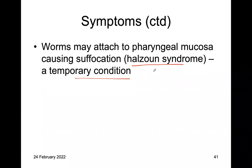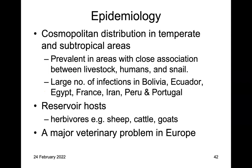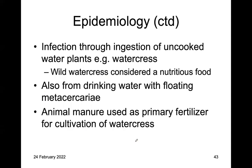Epidemiology: Fasciola hepatica has cosmopolitan distribution — worldwide in both temperate and subtropical areas. It is prevalent in areas with close association with livestock such as sheep, humans, and snails. There is a large number of infections in Bolivia, Ecuador, Egypt, France, Iran, Peru, and Portugal. The reservoir hosts are herbivores, as they eat watercress and plants. This is a major veterinary problem, especially in Europe. Infection occurs through undercooked water plants and drinking water with floating metacercariae. Animal manure used as fertilizer can also cause transmission.